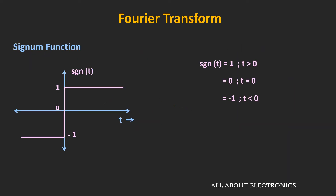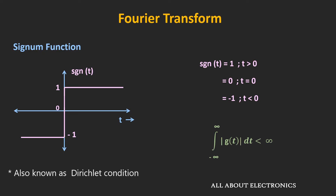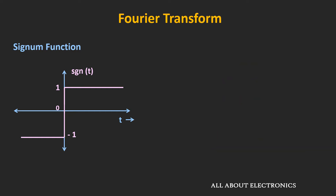And that function is the signum function. This is the graphical representation of the signum function. And as you can see, the value of this function is 1 for t greater than 0 and it is equal to minus 1 for t less than 0. And at time t is equal to 0, its value is equal to 0. So to find the Fourier transform of any function, the function should be absolutely integrable — that means it should follow this condition. But if you see this signum function, then it does not satisfy this condition. But still we can find the Fourier transform by considering this signum function as the summation of two exponentials.